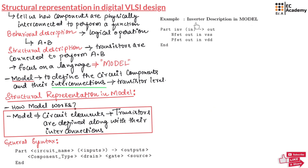Let us consider an example of inverter description in MODEL. An inverter takes an input and produces the complement of the input as the output. In the MODEL representation, the part is named INV with input and output. We use an NFET whose drain is output, gate is input, and source is connected to VSS. We also use a PFET whose drain is connected to output, gate is input, and source is connected to VDD. Then we end the MODEL.